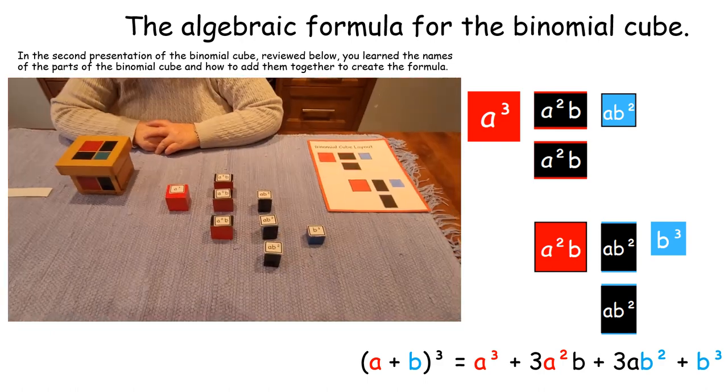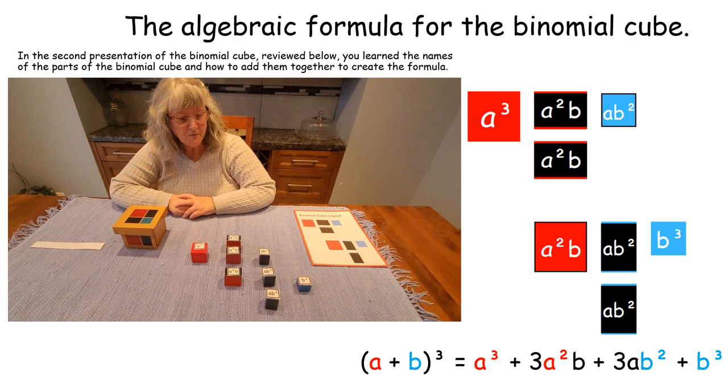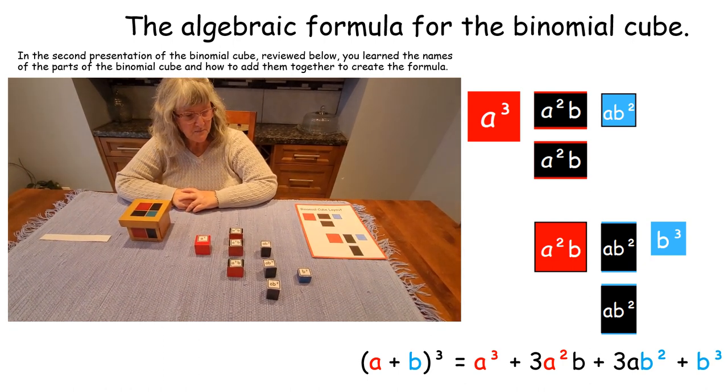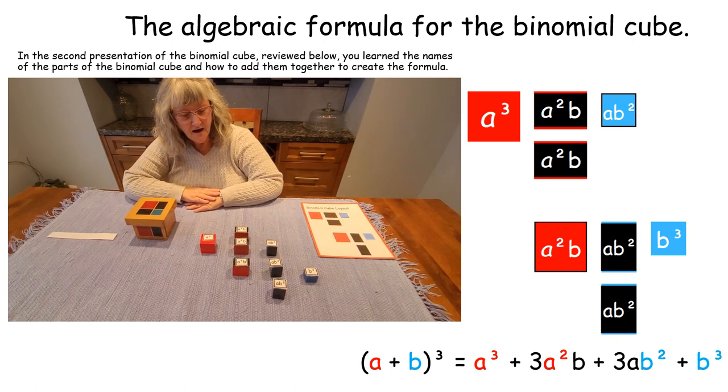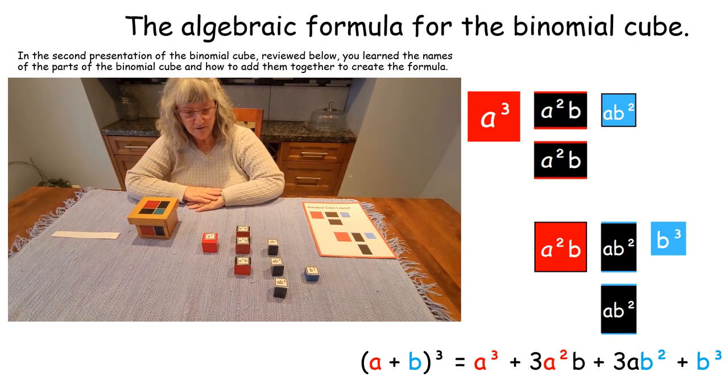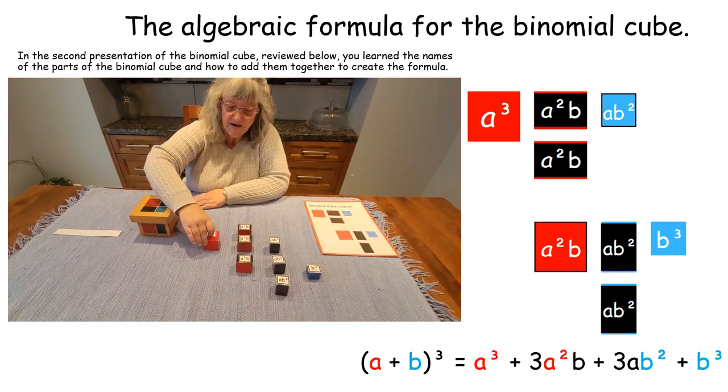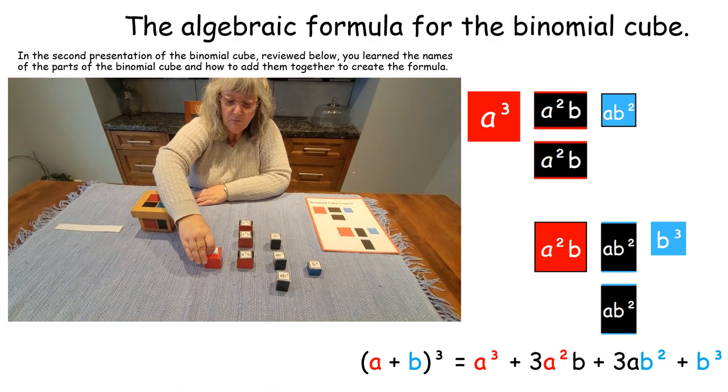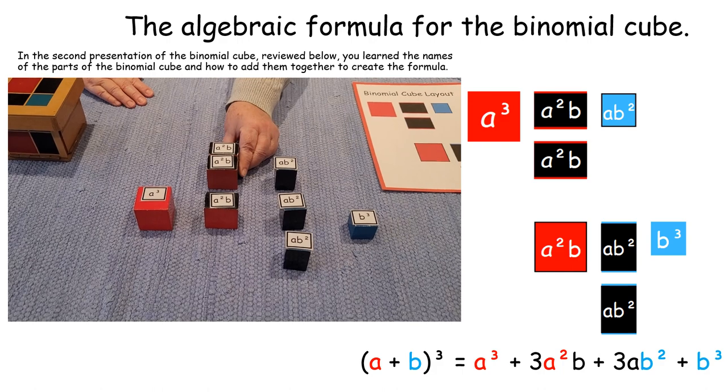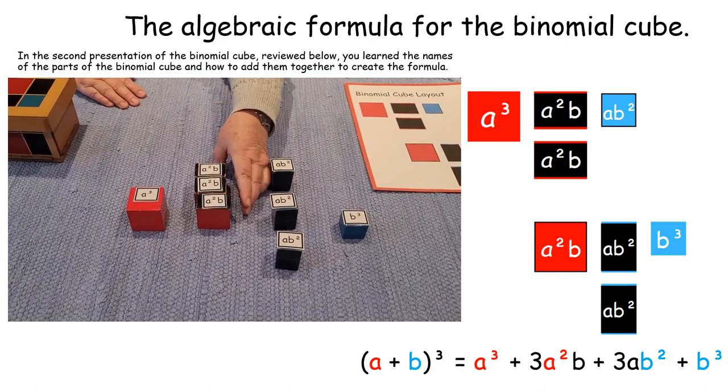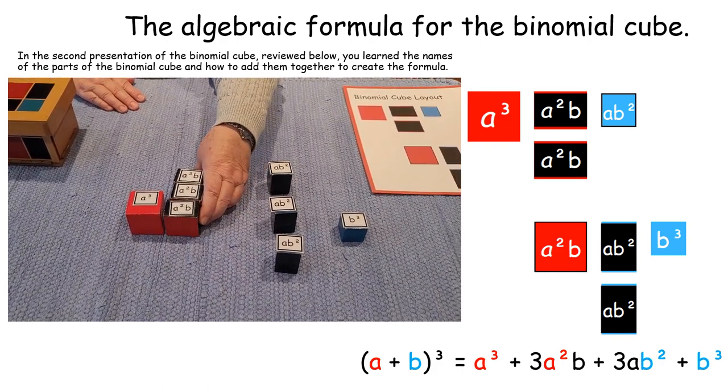Now, when we create the algebraic formula for A plus B cubed, which is the cube here, we add things together. We can see that we have only one A cubed, but we have one, two, three A squared B.